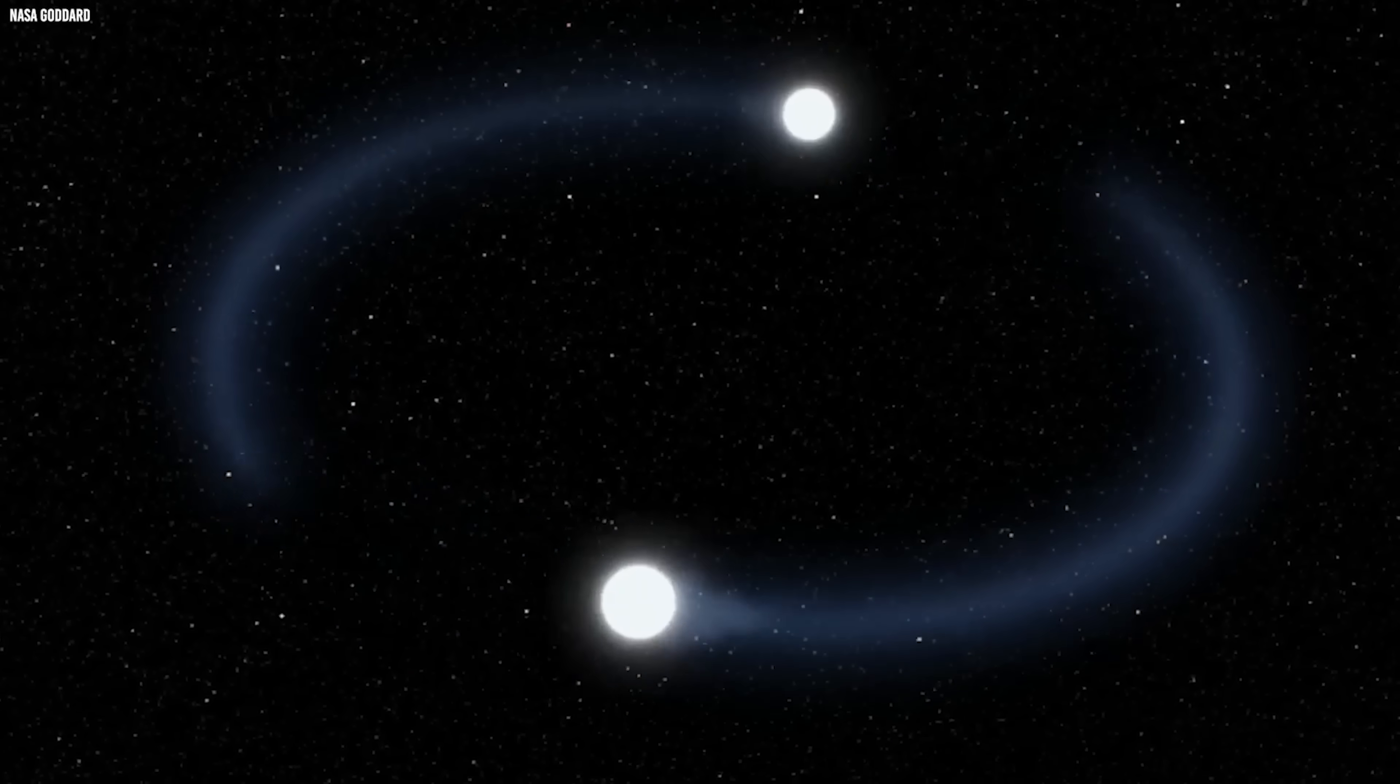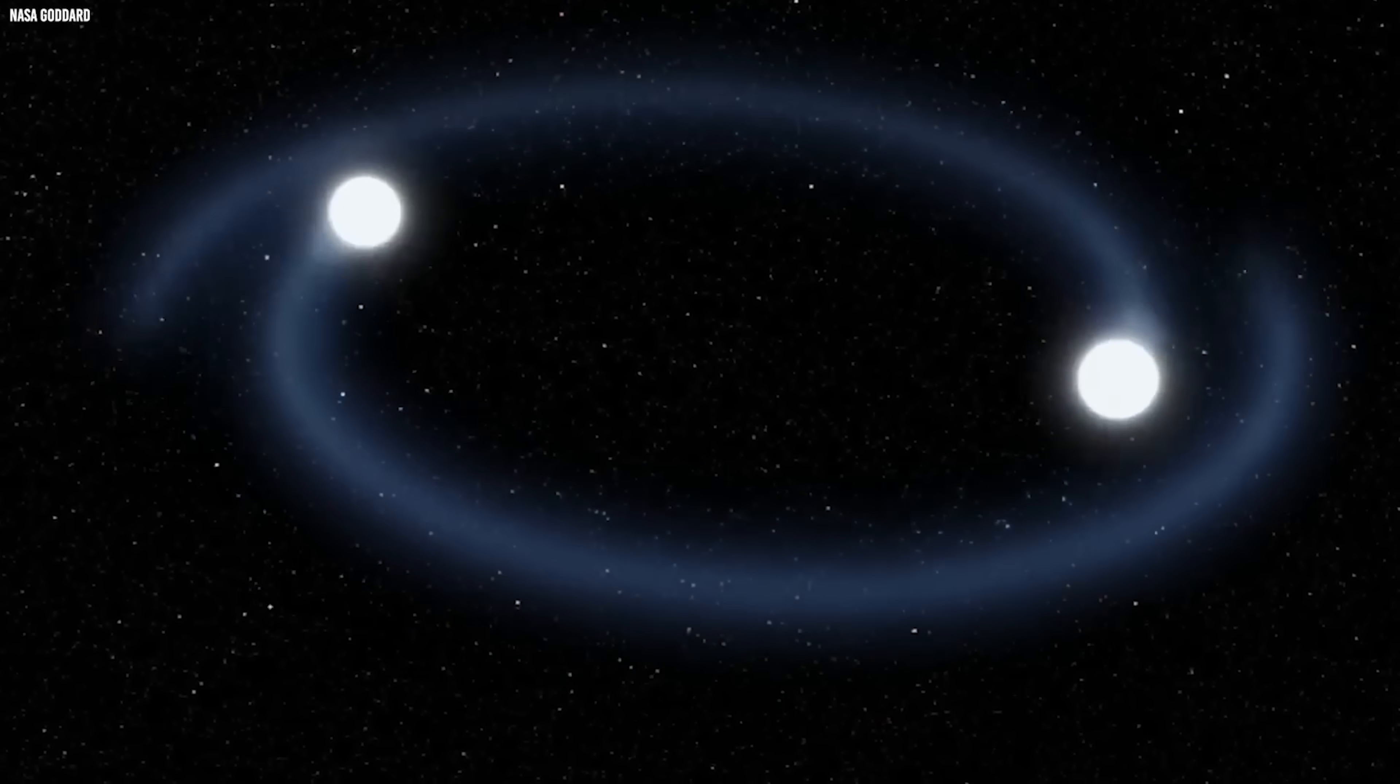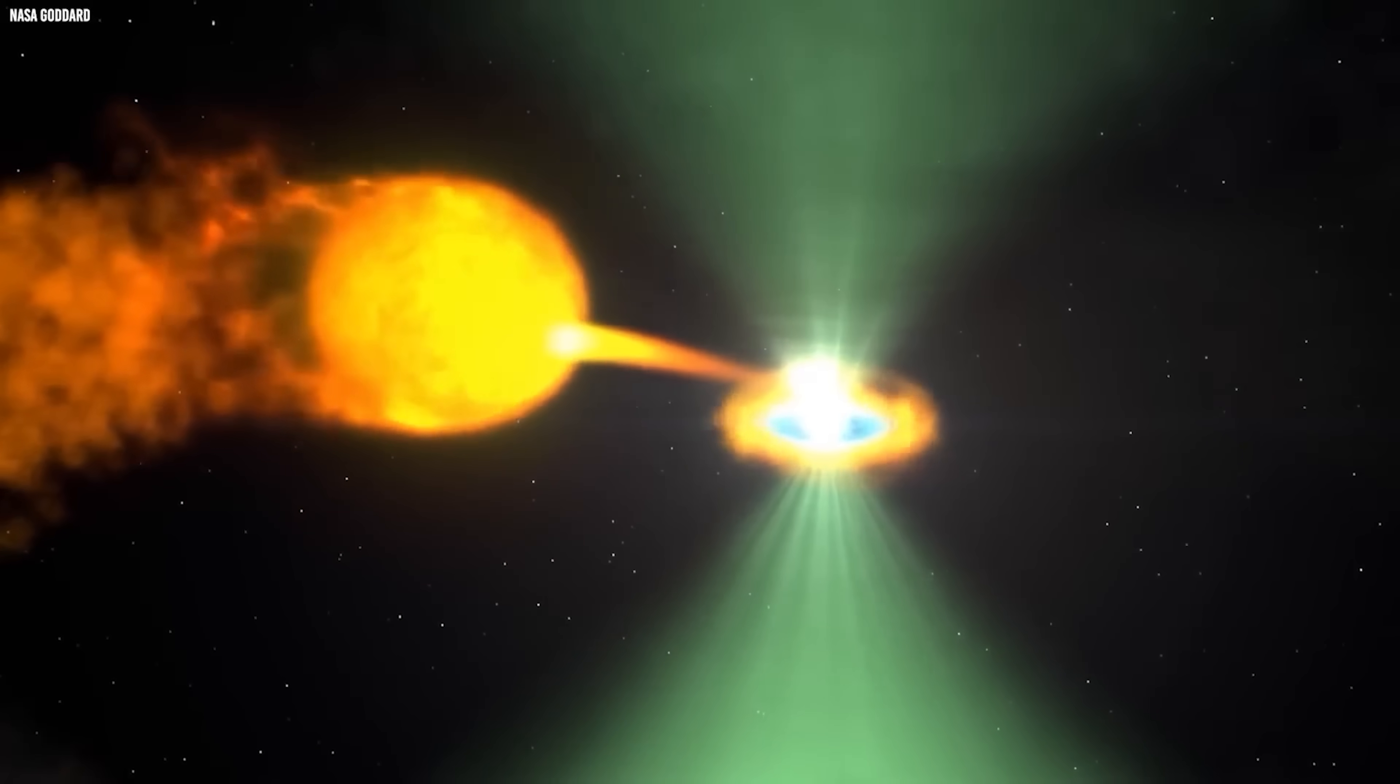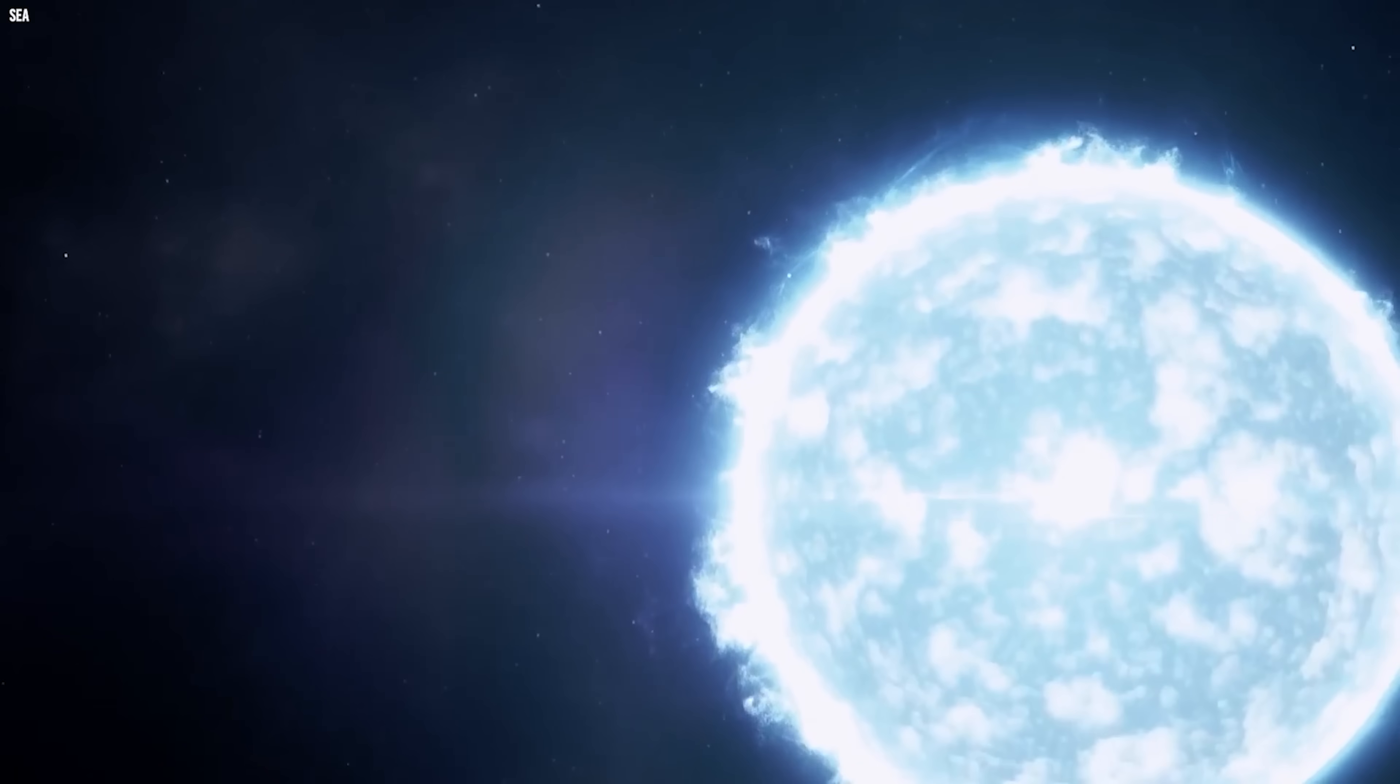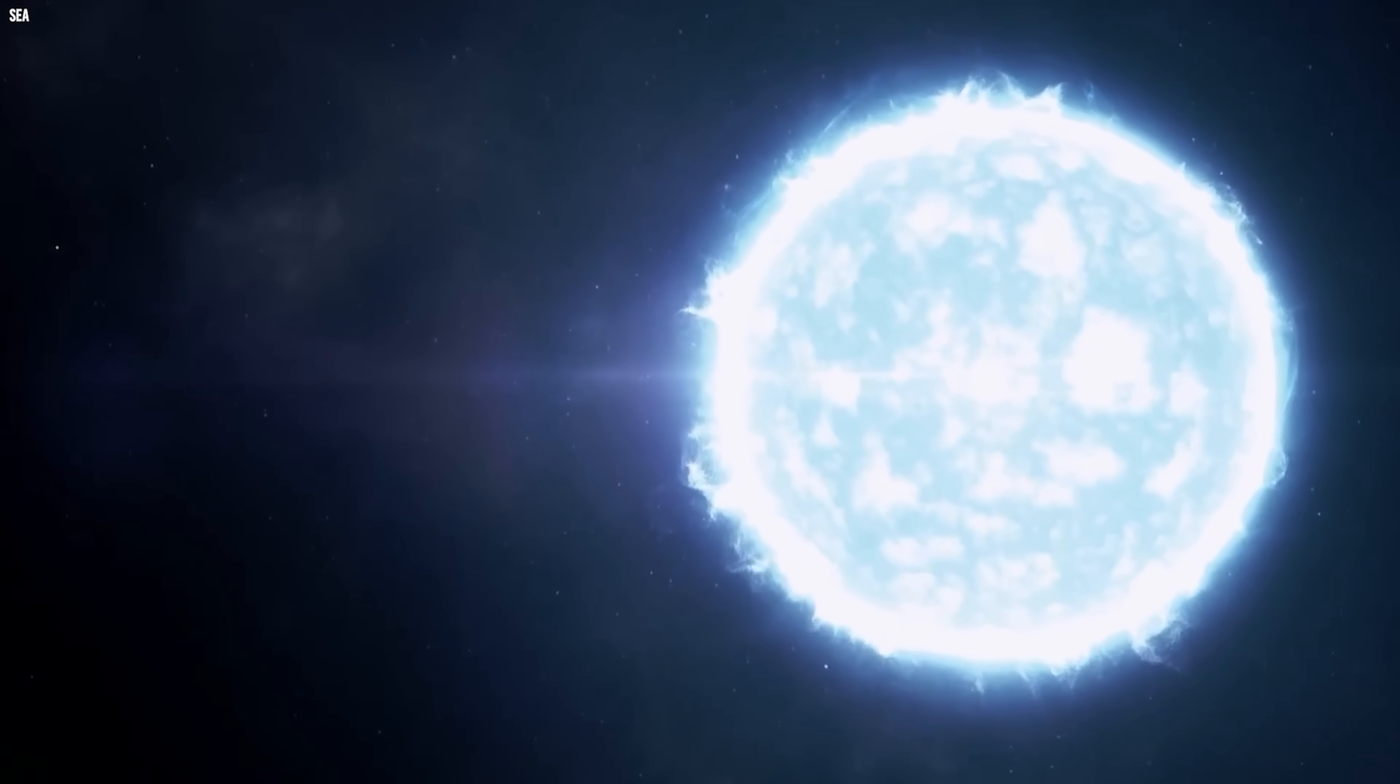Instead of a smooth stream, the material behaves like a storm, reinforcing the idea that the system has entered a rapid and unstable phase of evolution. The white dwarf is being fed faster than it can safely handle.